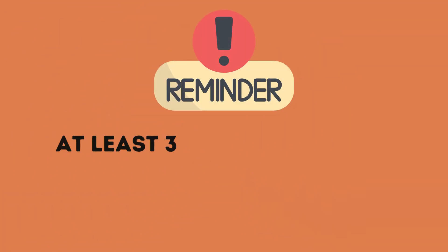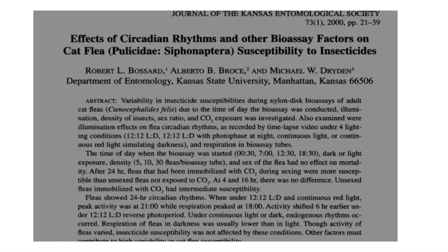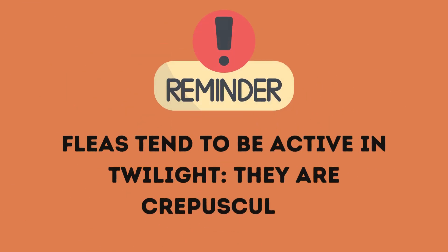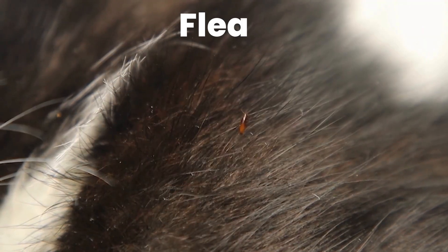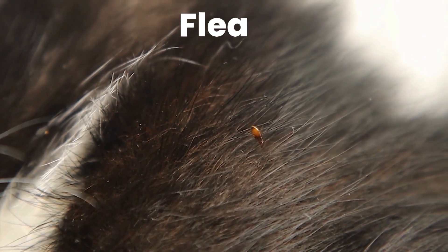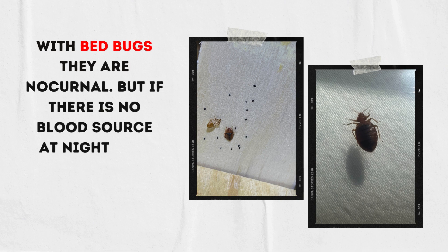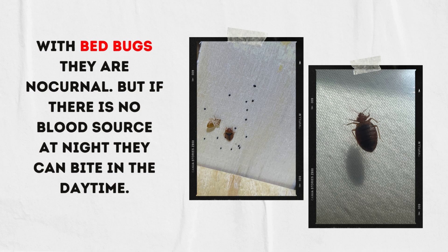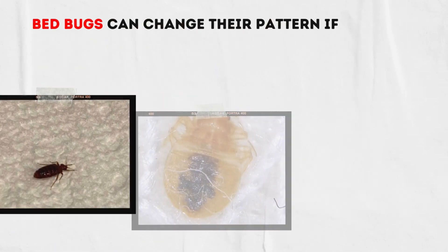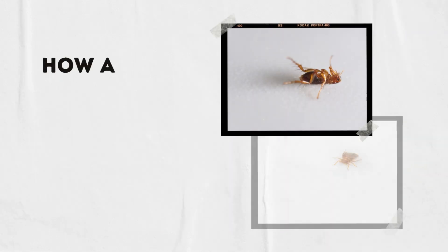Let's talk about when they're active and like to bite. According to a paper by Bassard, Browse, and Dryden, published in January 2000 in the Journal of Kansas Entomological Society, fleas tend to be crepuscular, which means they're most active in the evening hours. But bed bugs are nocturnal and more active in the late hours of the night. However, if you work at night and sleep during the day, a bed bug can change its patterns if there's nobody there for them to bite at nighttime.